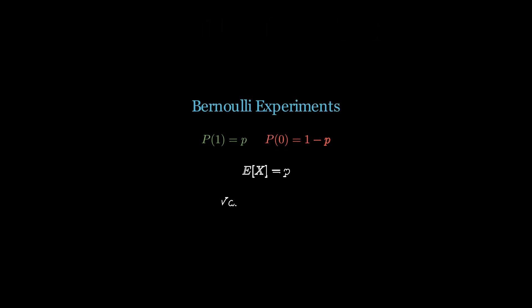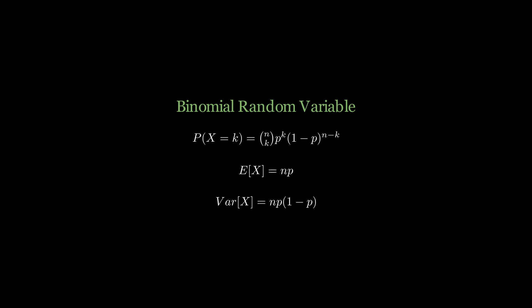In this video, we learned what a Bernoulli experiment is and the expected value and variance of a Bernoulli experiment. Then, we learned that a binomial random variable governs the number of successes through n Bernoulli trials and has expected value n times p and variance n times p times 1 minus p. Thank you for watching and please subscribe to the channel for more content on probability, logic, and beyond.